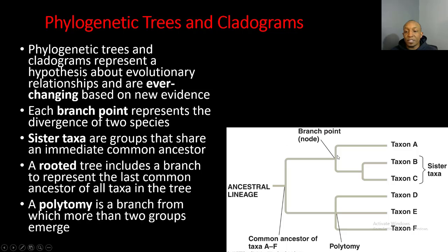For example, here's a branch point right here. We can say that the organisms up here are vertebrates — they have backbones — and the organisms right here are taxon B and C, which do not have backbones. Notice this branch point shows a change or a difference between the two.